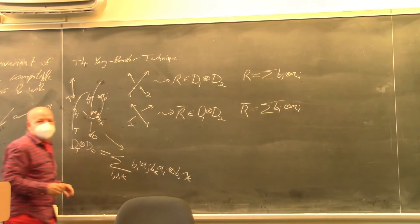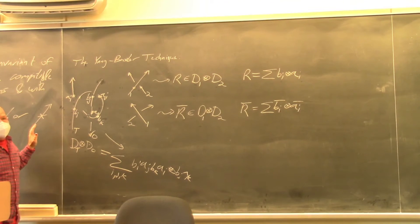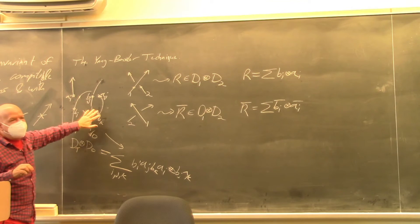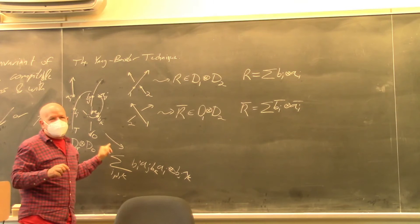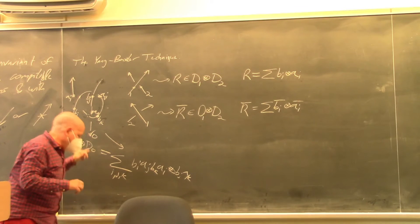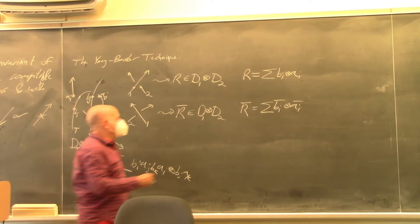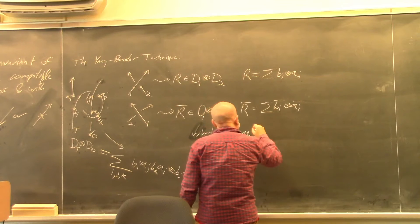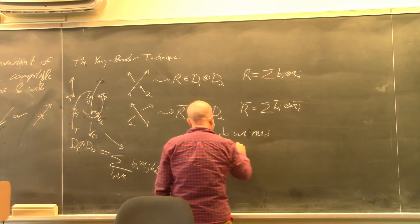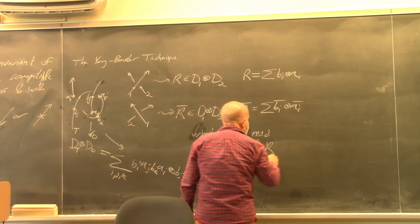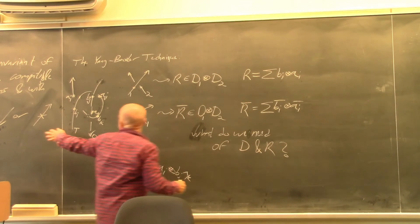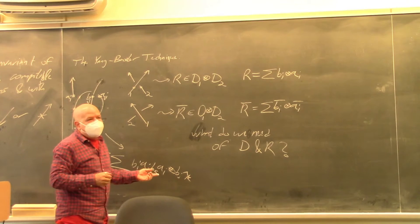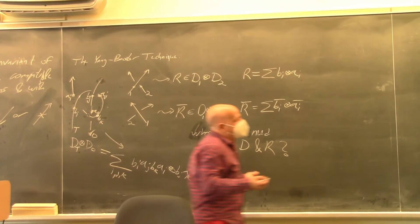Given r and r-bar, I've given a well-defined prescription for going from a tangle diagram to an element in a tensor product of copies of the algebra. Now the question is: what do we need from D and r so that all the good invariance properties hold? The first thing is that D needs to be an algebra.